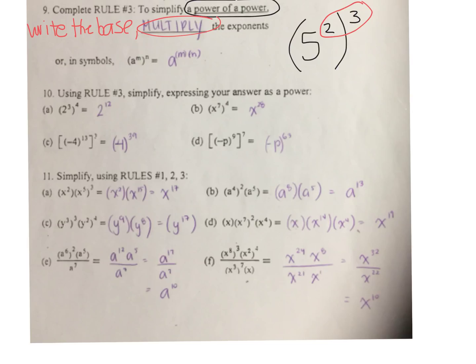Number 10 is simple. 2 to the power of 3 to the power of 4: 3 times 4 is 12. 7 times 4 is 28. Once again, we have a negative: 9 times 7 is 63. Negative 4 is my base. 13 times 3 is 39.